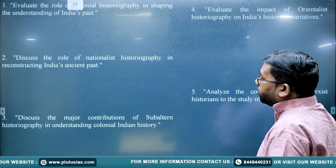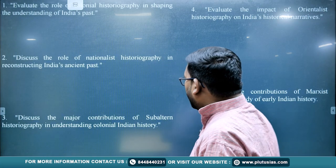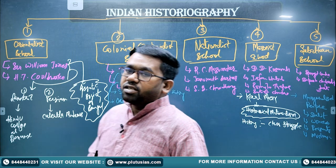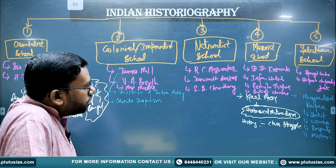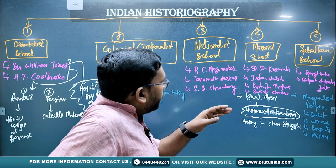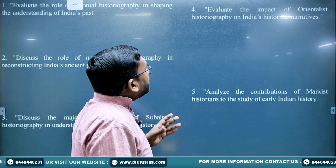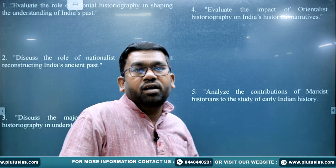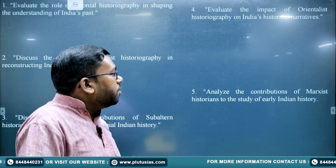Question three: 'Discuss the major contribution of Subaltern historiography in understanding colonial history.' In the Subaltern school, you will write about Ranajit Guha, Dipesh Chakrabarty, Shahid Amin, and many other people. Question four: 'Evaluate the impact of Orientalist historiography on the Indian historical narrative.' Here you can mention William Jones, Colebrooke, James Mill, V.A. Smith, and Max Müller.